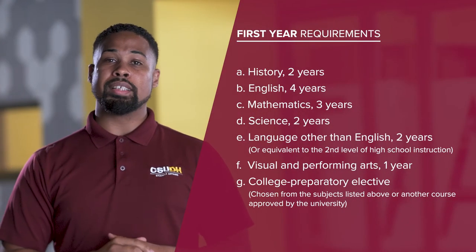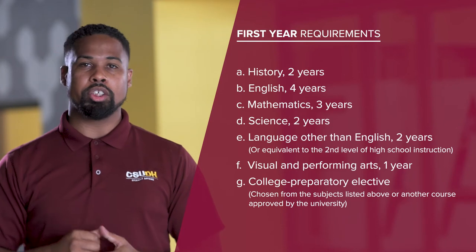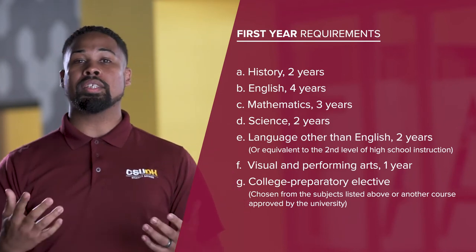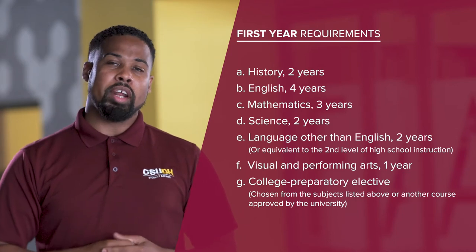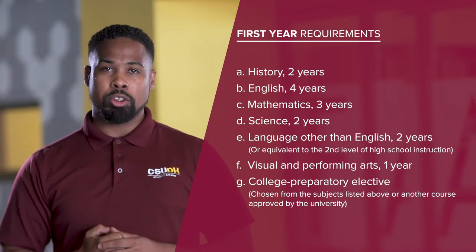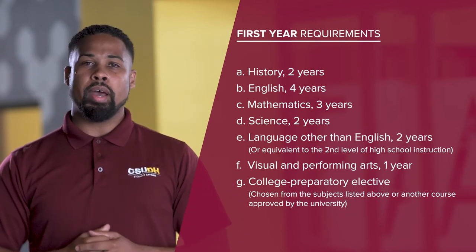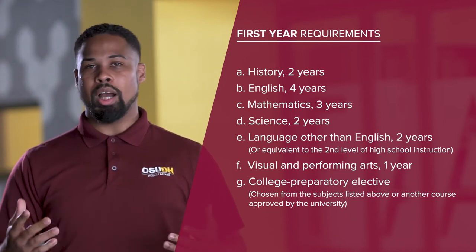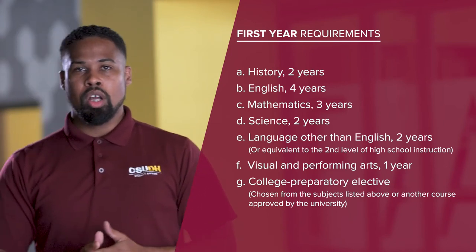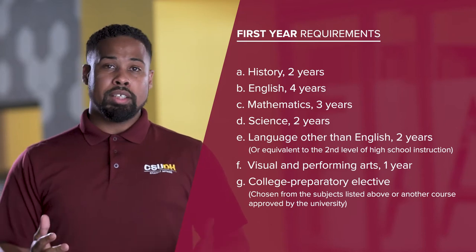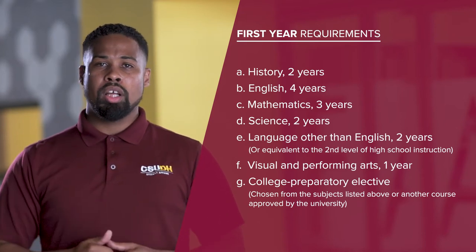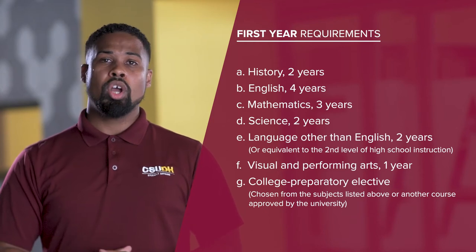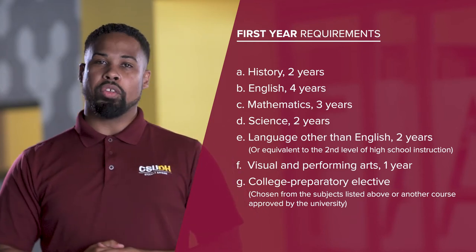The A through G requirements consist of two years of history including one year of U.S. history and government. The next is four years of English, three years of mathematics which would include Algebra 1, Geometry, and Algebra 2. Two years of science that would include biology and physical science.